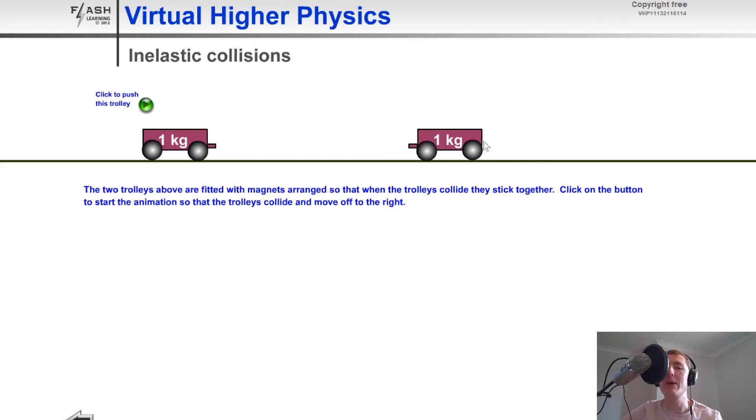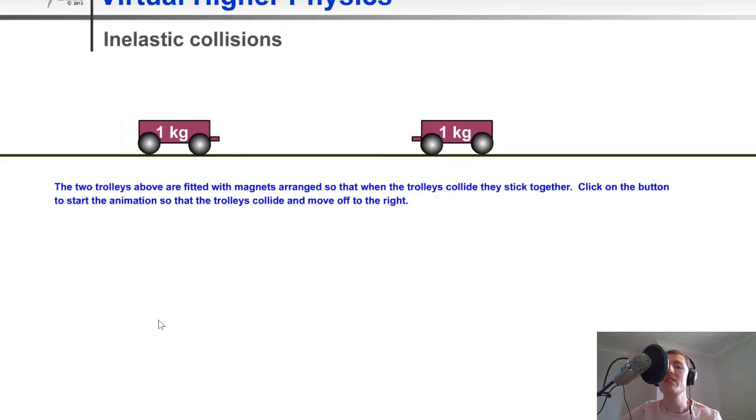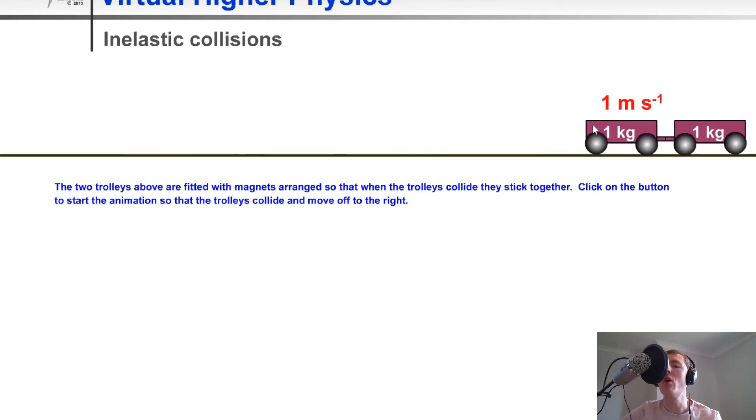So here we have two 1kg trolleys and the one on the left hand side is going to move towards the one on the right hand side, and this one over here is going to remain stationary. What we can see here is that both objects lock together and move off at the same velocity. The trolley on the right hand side was initially stationary. So in this type of interaction there will be some kinetic energy lost but momentum is conserved.